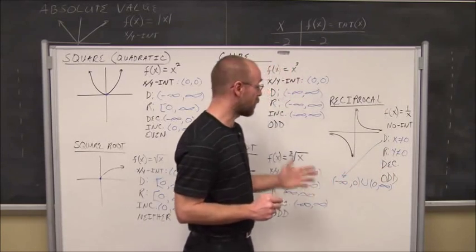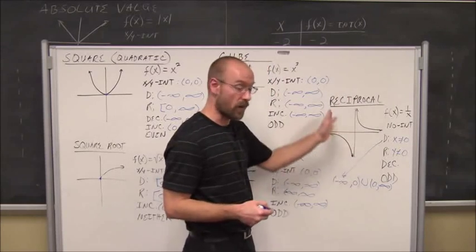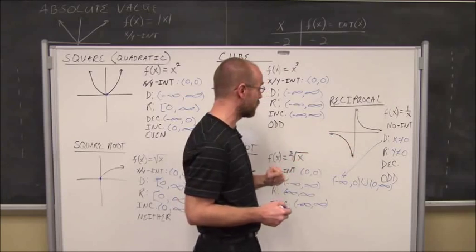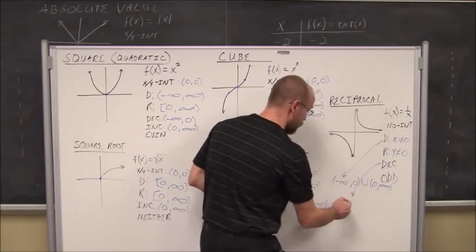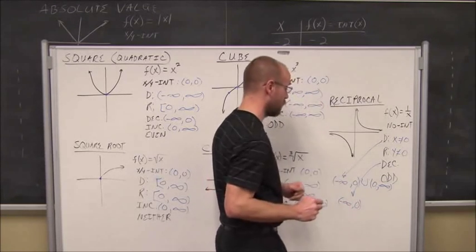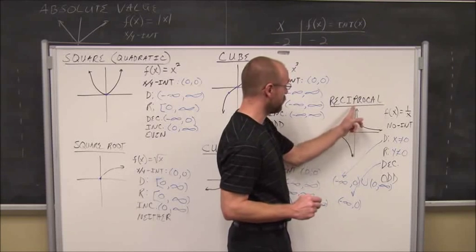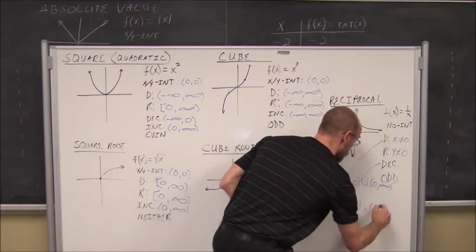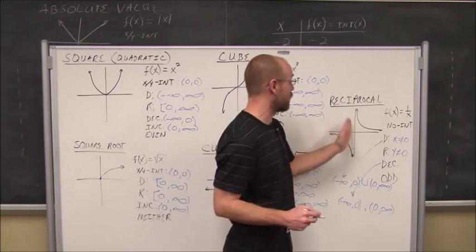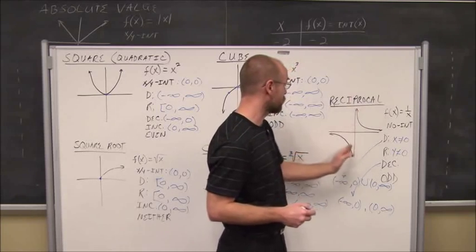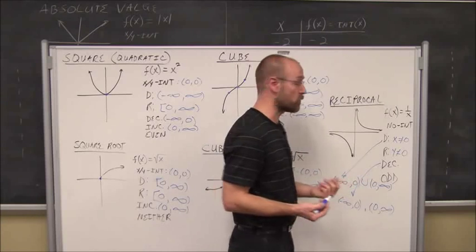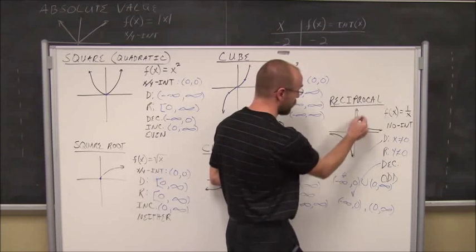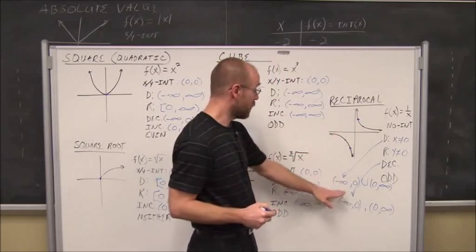The reciprocal function is a decreasing function everywhere, except where the graph has no piece at x equals 0. As we move left to right, y is decreasing as we get infinitely close to 0 from the left, and also decreasing on the right side of 0. So it's decreasing on two intervals: from negative infinity to 0, and from 0 to positive infinity. It's also an odd function, because any value is reflected through the origin.